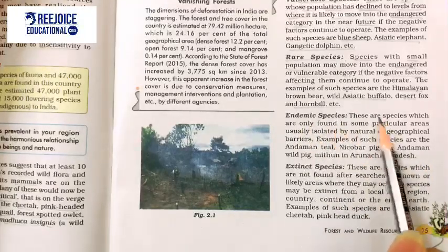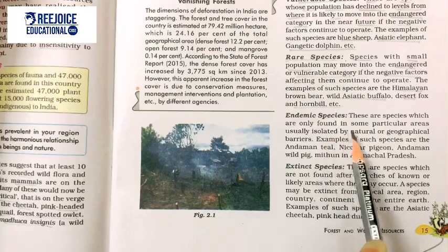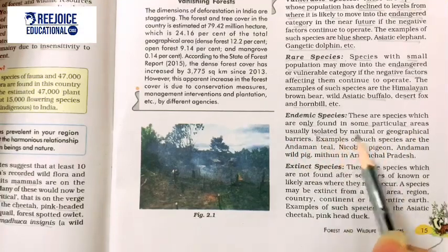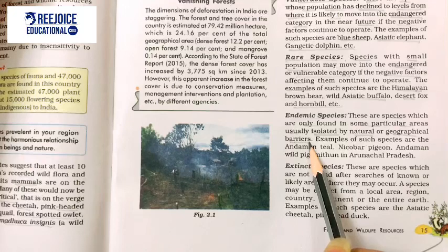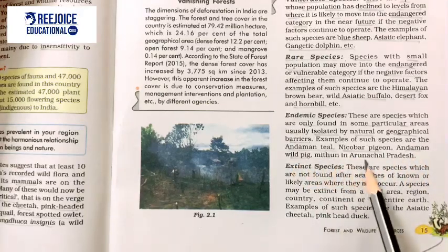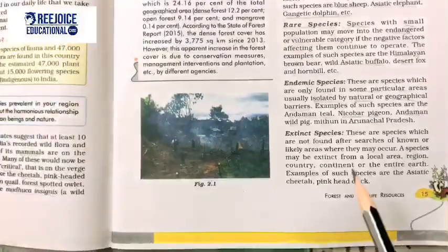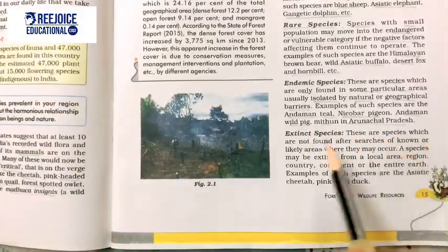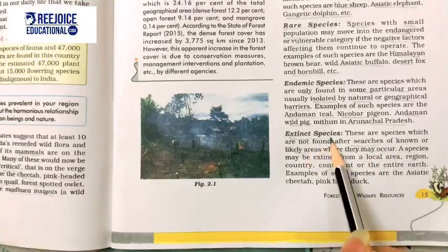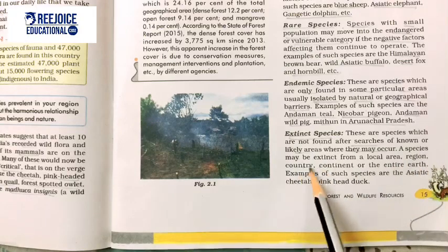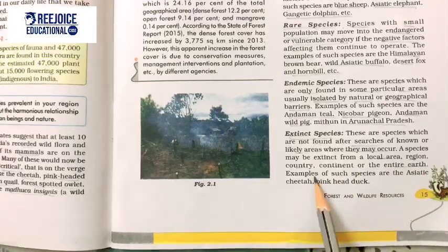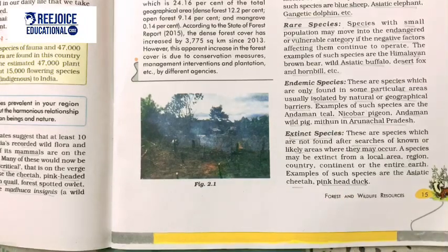Endemic Species are species found only in particular areas, usually isolated by natural or geographical barriers. Examples include the Andaman teal, Nicobar pigeon, and Andaman wild pig. Finally, Extinct Species are those not found after searches of known or likely areas where they occur — extinct from a local area, region, country, continent, or the entire earth. Examples include the Asiatic cheetah and pink-headed duck.